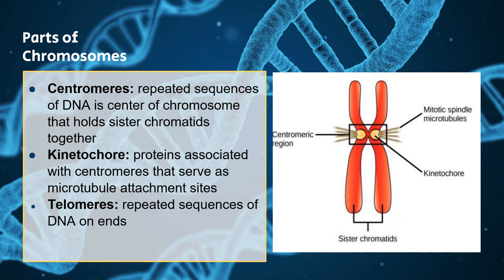For the structure of parts of the chromosomes: first we have the centromeres, which hold the sister chromatids together and are just repeated sequences of DNA. Associated with these centromeres, we have proteins called kinetochores, which serve as microtubule attachment sites. And then the last part is telomeres, which are just repeated sequences of DNA on the ends of chromosomes. As you age, your chromosomes actually shorten, so we have telomeres there to protect your chromosomes, because since they're repeated sequences, it's not as important if those shorten and get lost.